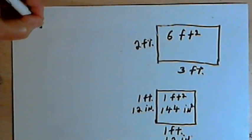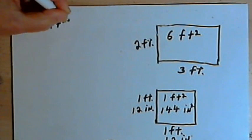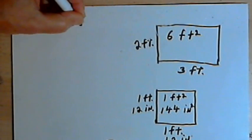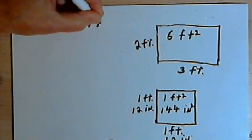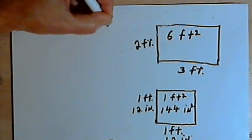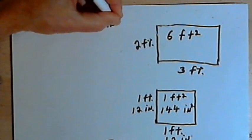Let's write that down: 1 square foot equals 144 square inches.